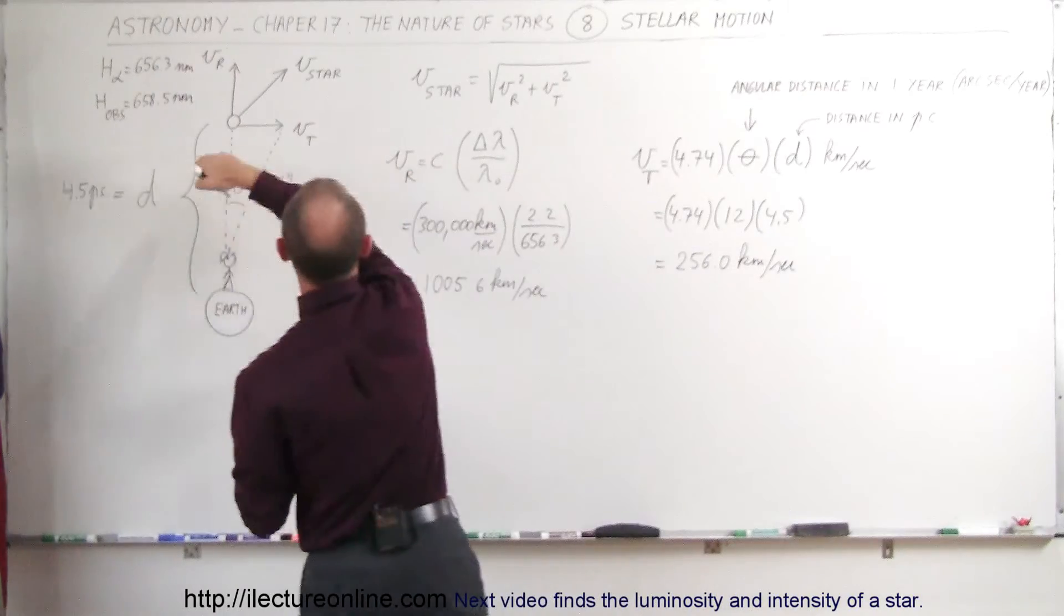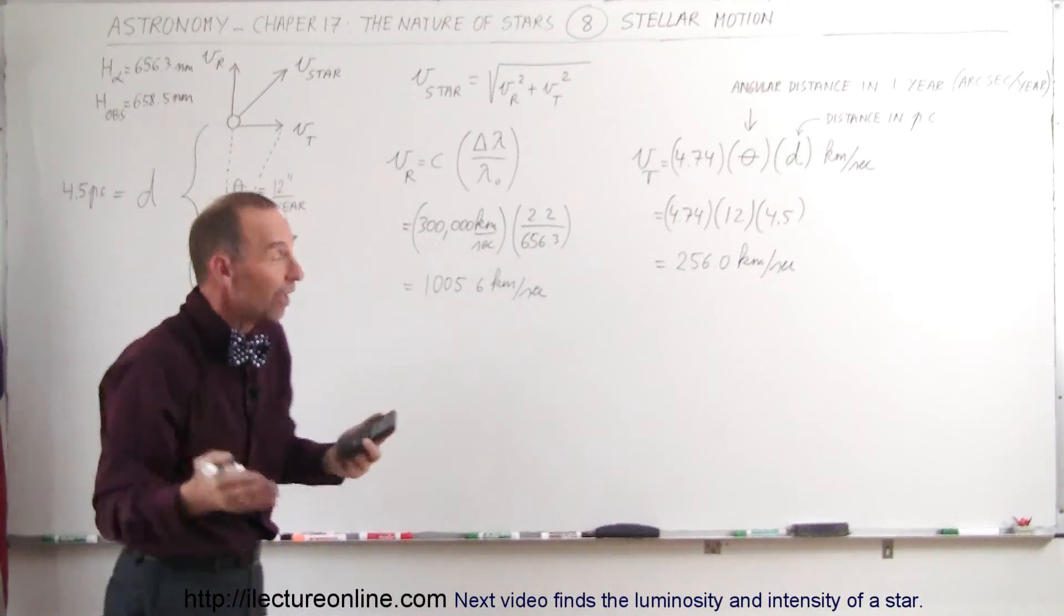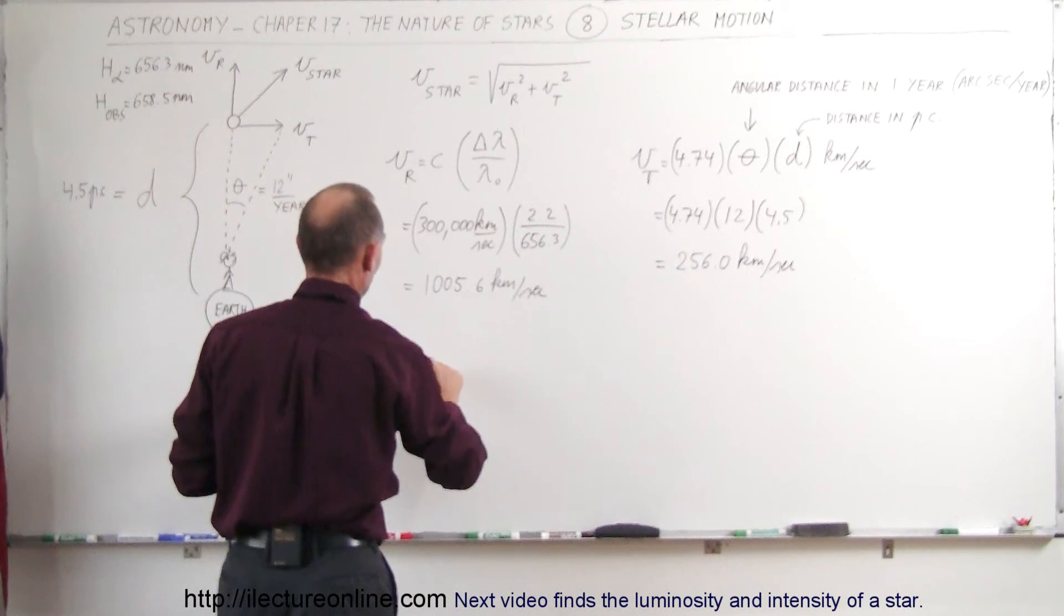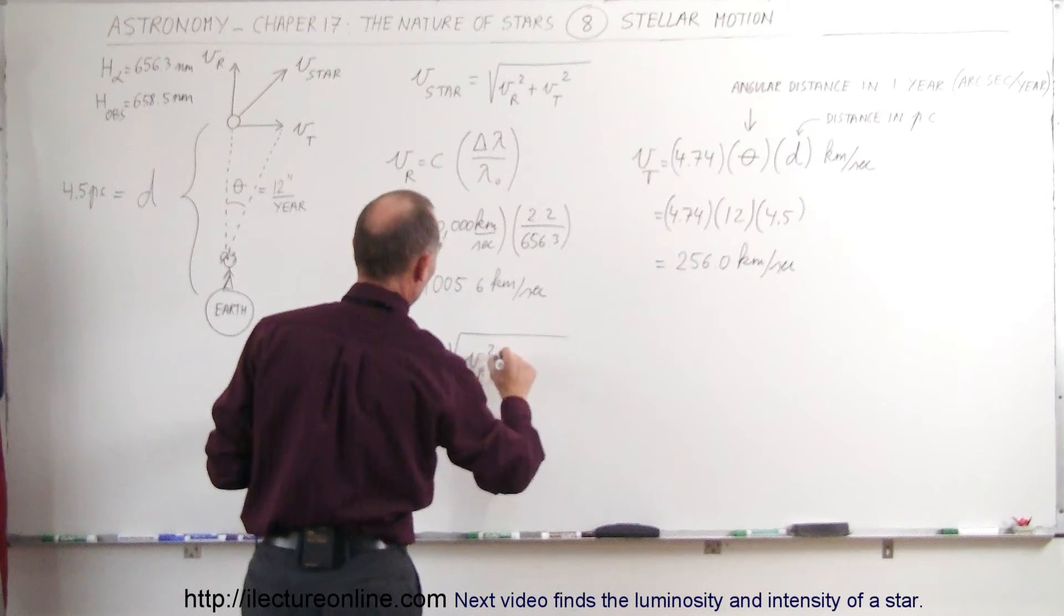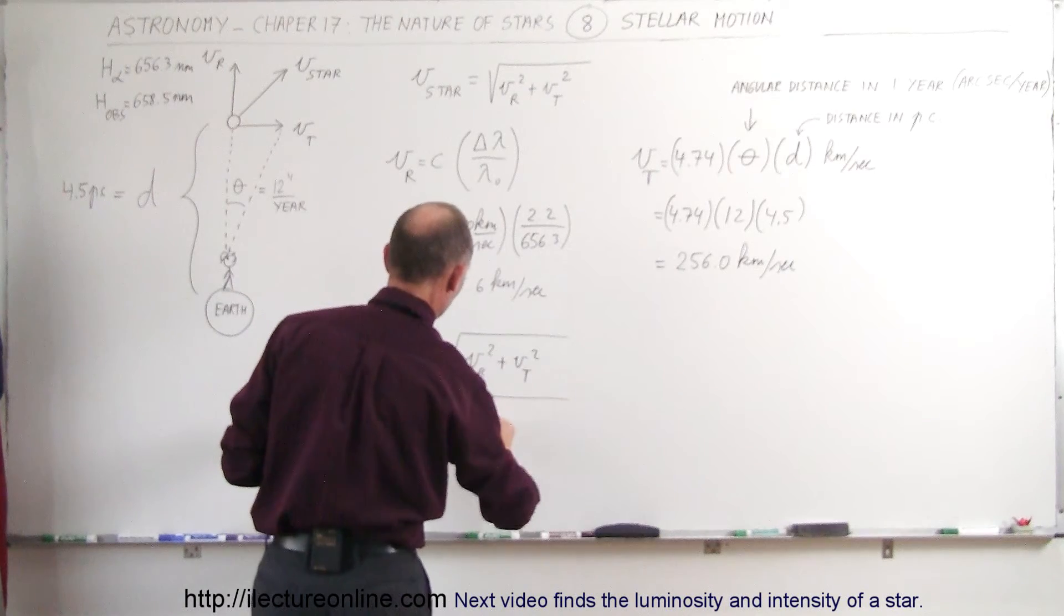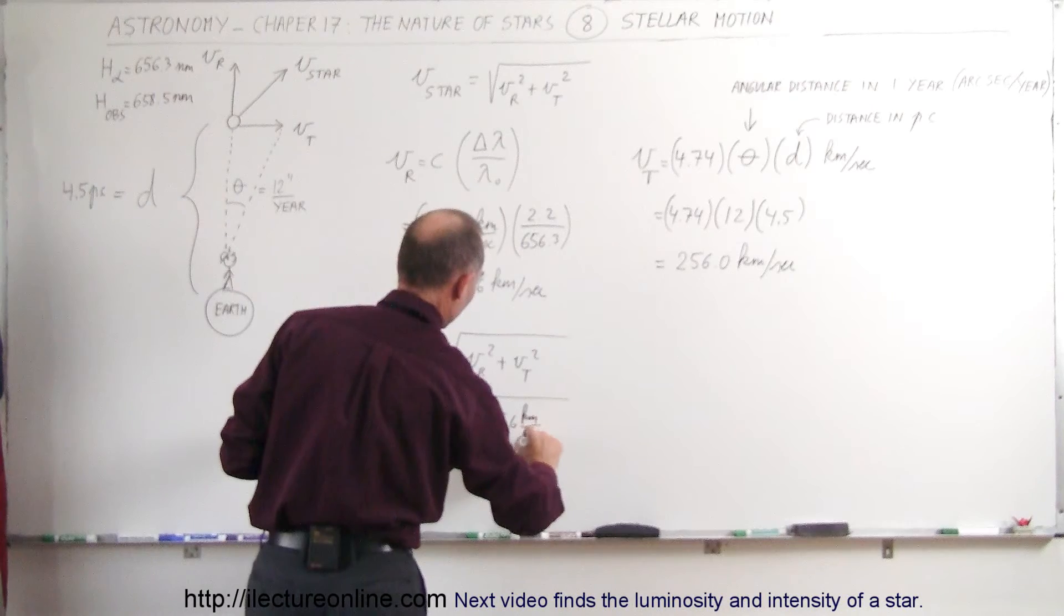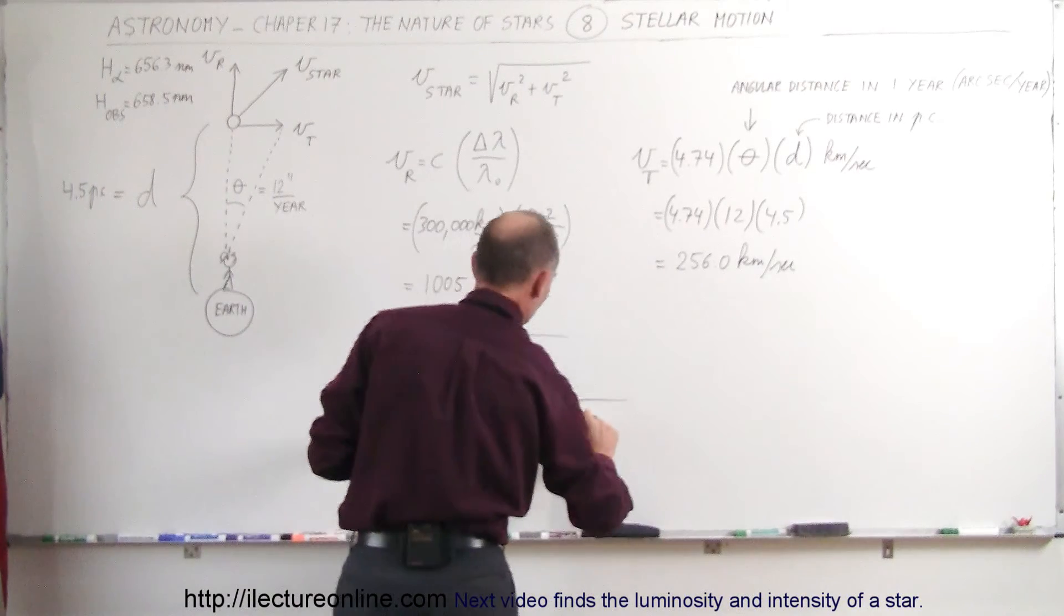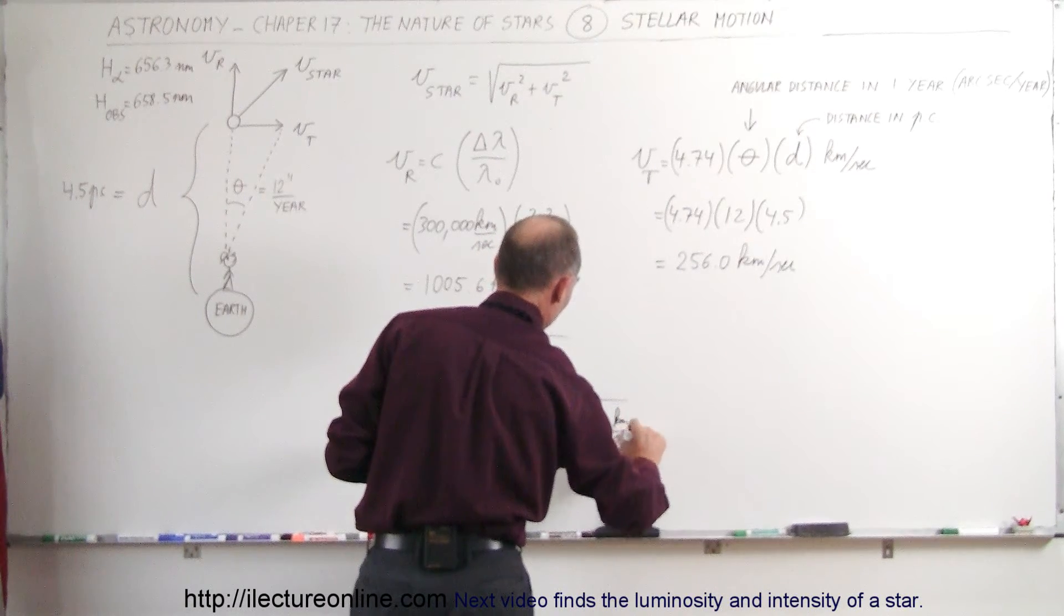So that would be the velocity in this direction, here would be the velocity in that direction. So now to find the total velocity, the velocity of the star, we note that that will be equal to the square root of the radial velocity squared plus the tangential velocity squared. So that would be equal to the square root of 1,005.6 kilometers per second quantity squared plus 256.0 kilometers per second, and we also square that.